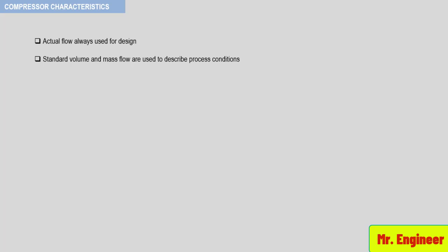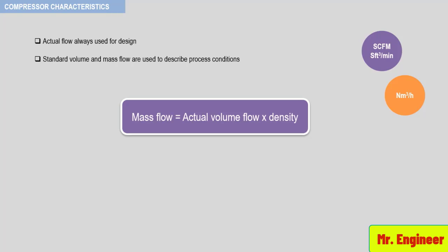Standard volume and mass flow are used to describe process conditions. Standard volume is referred to in this course as SCFM and is measured in standard cubic feet per minute or normal cubic meter per hour. If there is not any condensate formed within a compressor section, the standard and mass flow through a compressor remains unchanged. The mass flow can be calculated using the following formula: it is equal to the actual volume flow times the density of the gas.